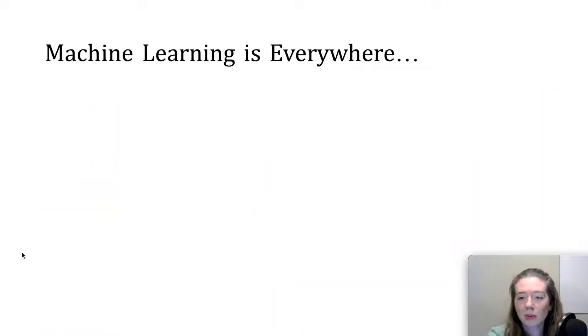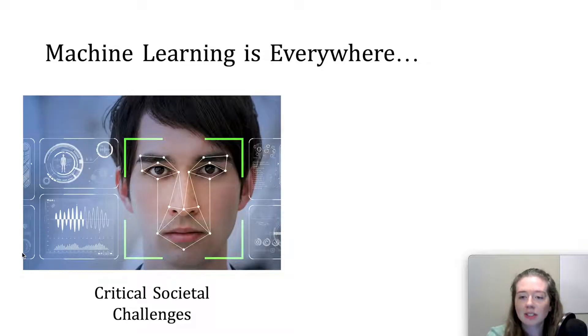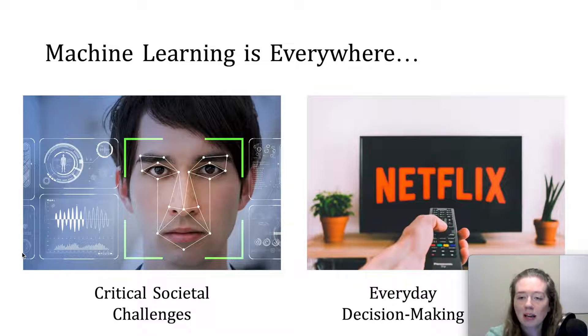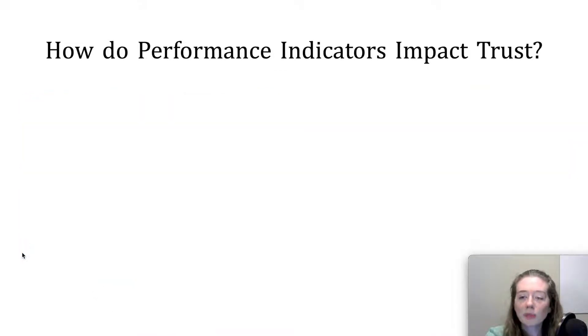Machine learning has become ubiquitous. Today with the use of machine learning, we are solving problems from critical societal challenges to decision making in everyday life. As the population of those regularly exposed to machine learning expands, the question of which factors impact end users' trust in these models has been a topic of interest.